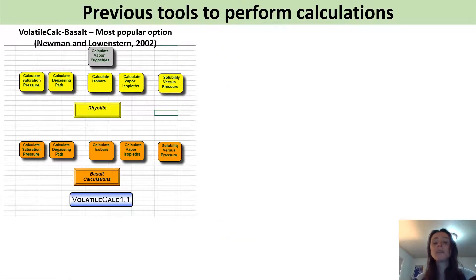So a number of tools exist to perform these calculations. By far the most popular is volatile calc which is an excel spreadsheet many of you will be familiar with where you simply click the button. So say you want to calculate saturation pressure you would click this basalt button here. It then asks you to type in the silica content of your liquid, the temperature, your water and your CO2 content and then it will return a pressure.